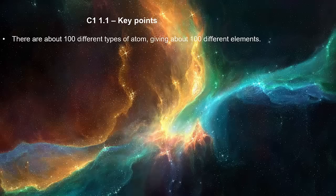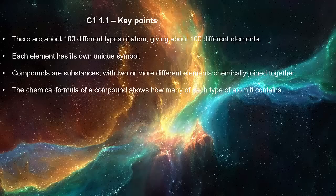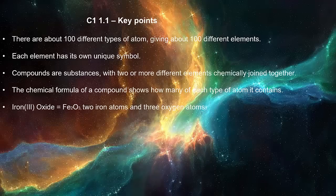There are about 100 different types of atom, giving about 100 different elements. Each element has its own unique symbol. Compounds are substances with two or more different elements chemically joined together. The chemical formula of a compound shows how many of each type of atom it contains. Iron oxide has the formula Fe2O3, which has two iron atoms and three oxygen atoms.